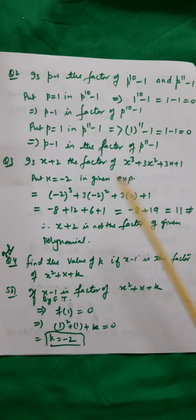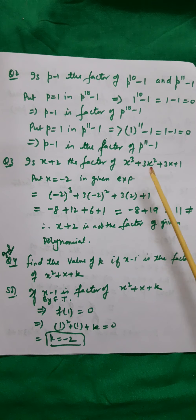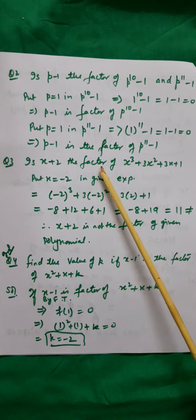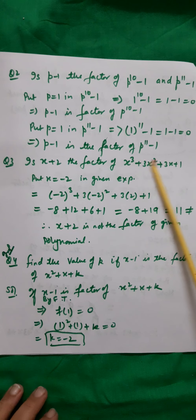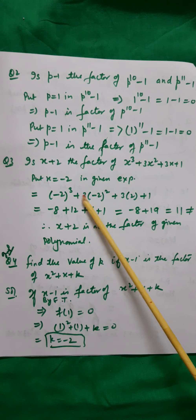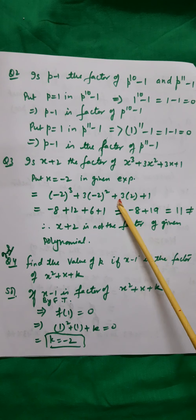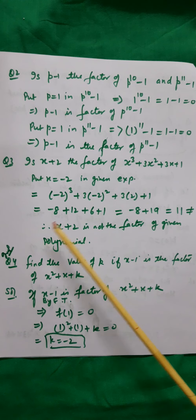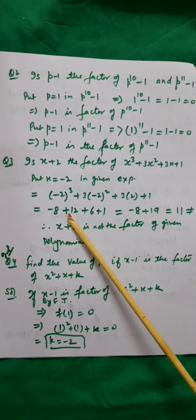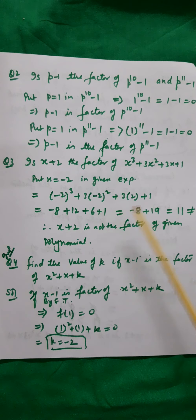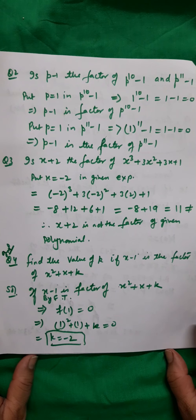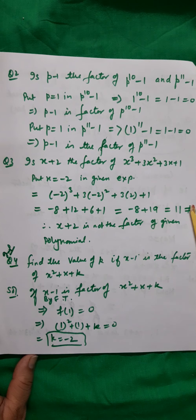Is (x + 2) a factor of x³ + 3x² + 3x + 1? Put x + 2 = 0, so x = −2. Then p(−2) = (−2)³ + 3(−2)² + 3(−2) + 1 = −8 + 12 − 6 + 1 = −1, which is not equal to 0. Therefore, (x + 2) is not a factor of the given polynomial.